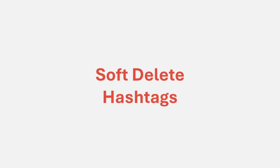In this lecture, we are going to understand how to soft delete a record in a table. Soft delete simply means that we do not actually delete the record from the table. Instead, we use a flag in the table to specify that the row is deleted — it's not the actual delete, it is just flagged as deleted.